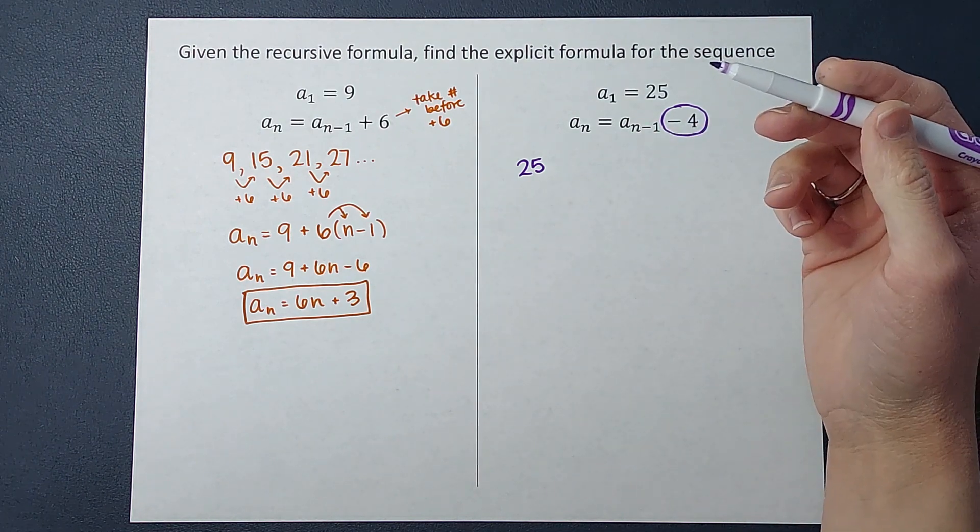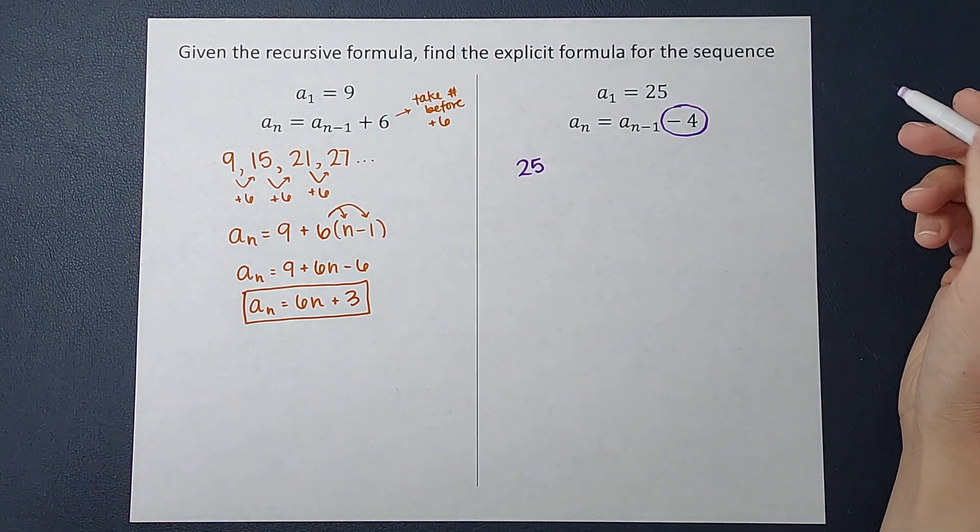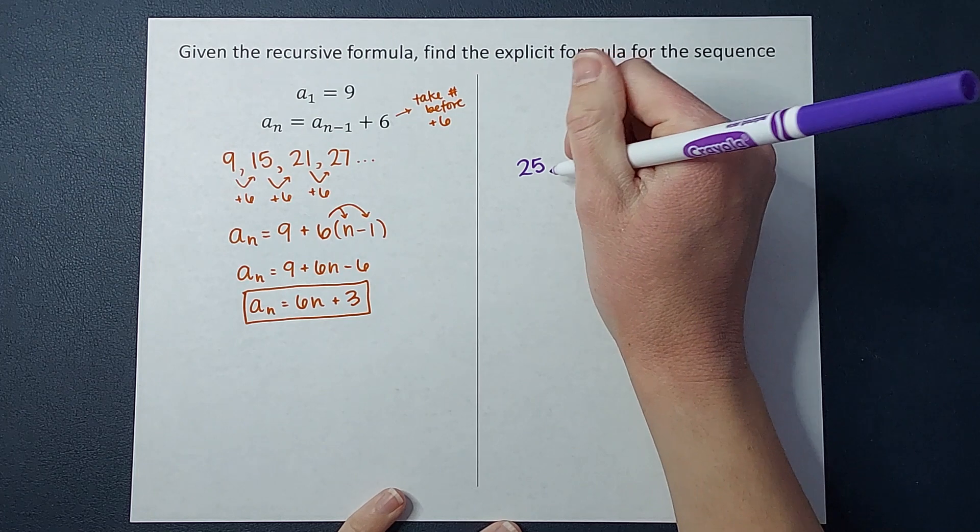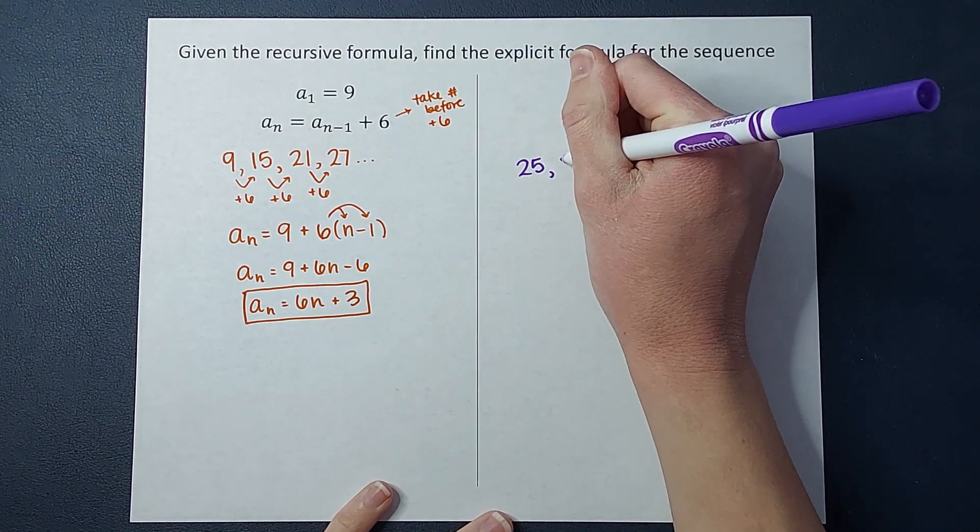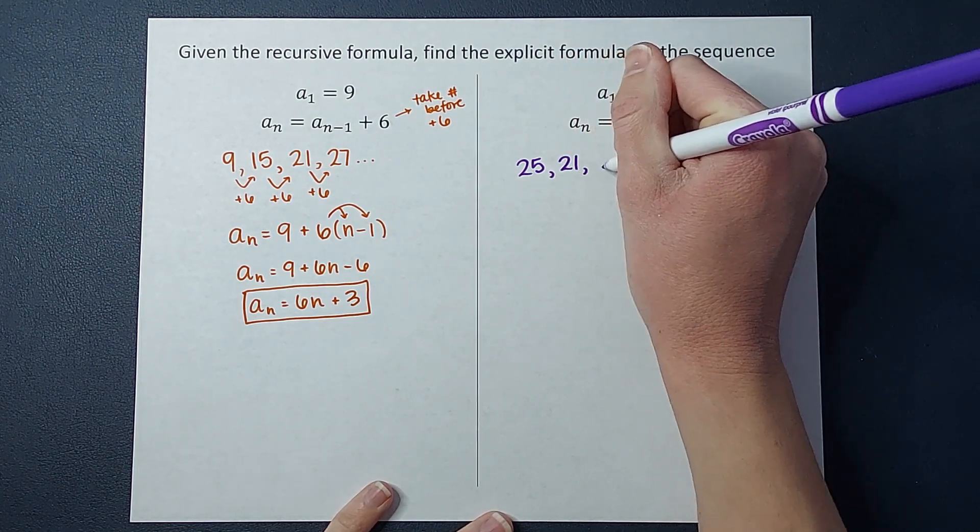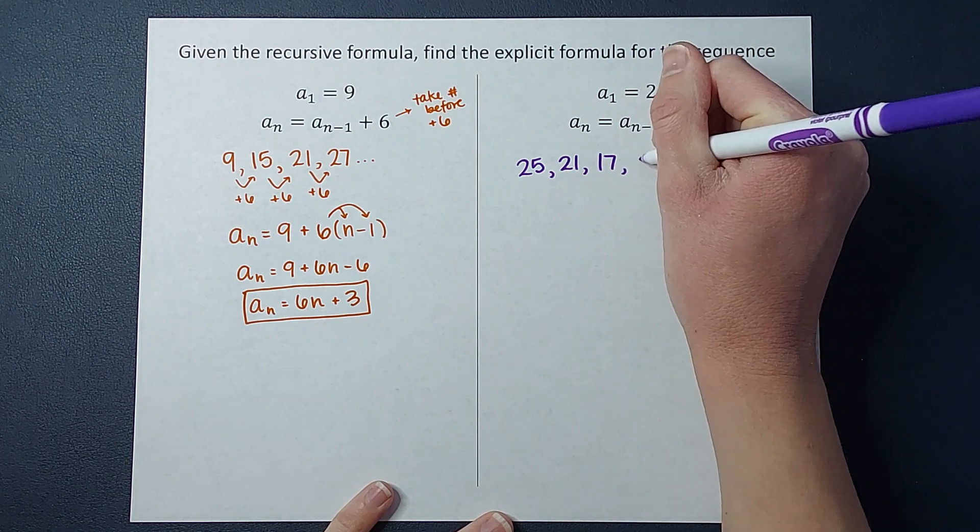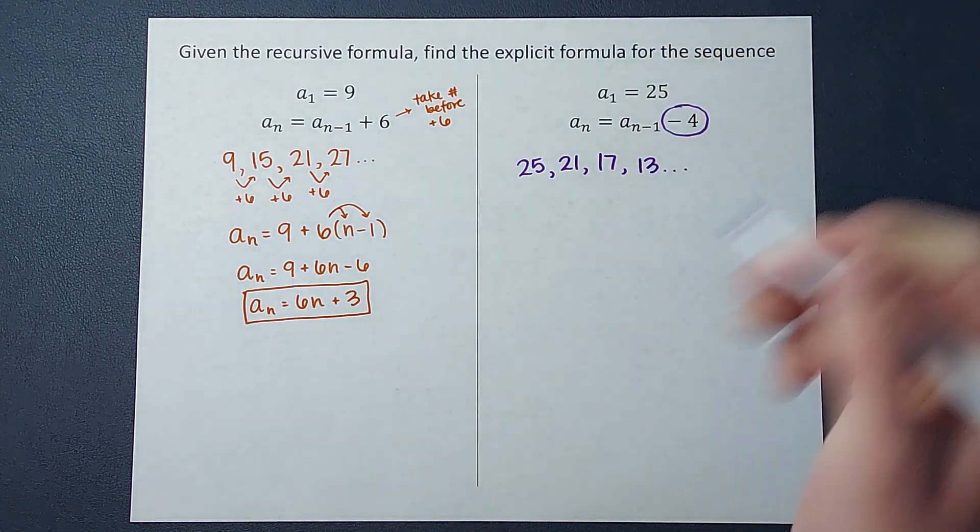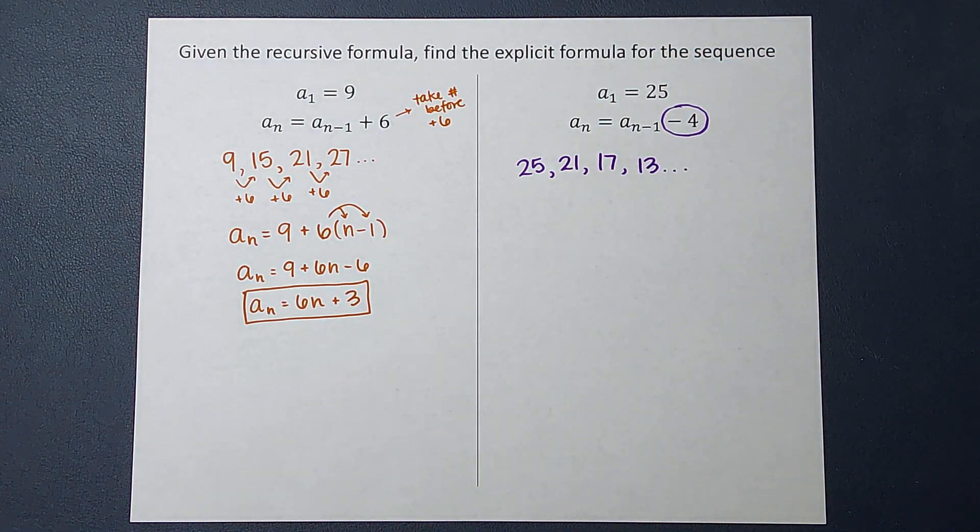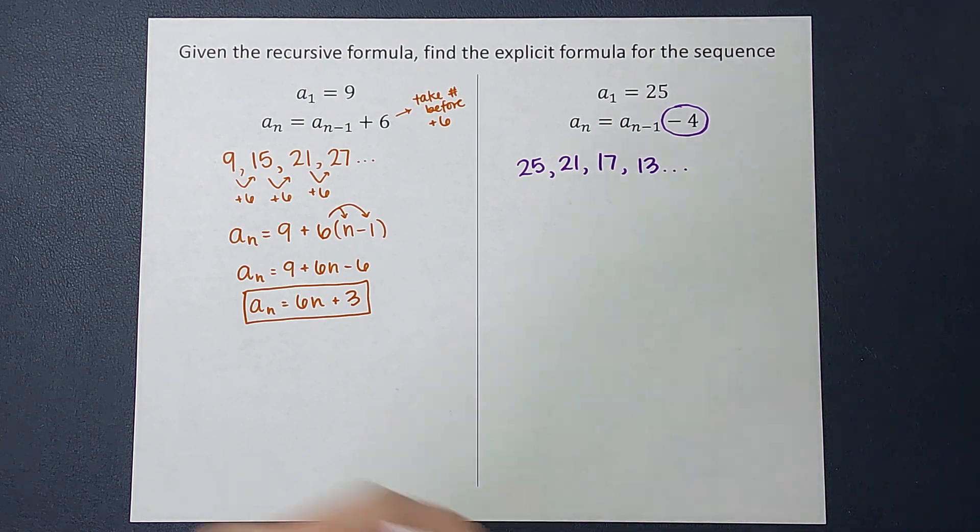So I'm subtracting four each time in this sequence. So I mean I can figure it out if I wanted to. The next number would be 21. Then 17. Then 13. And I could keep figuring that out. So what is the explicit formula for this?